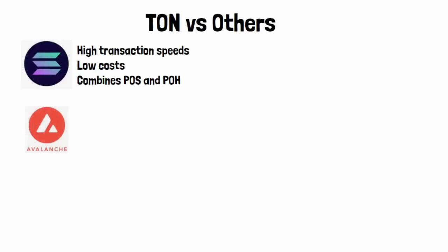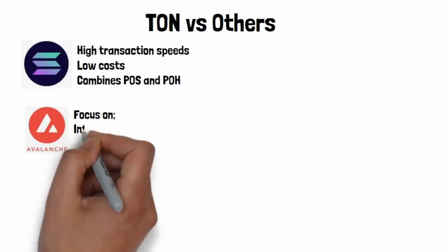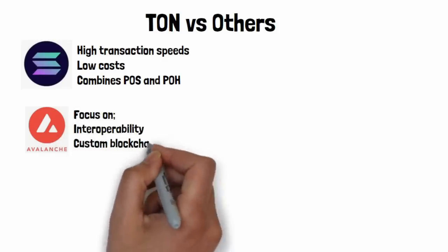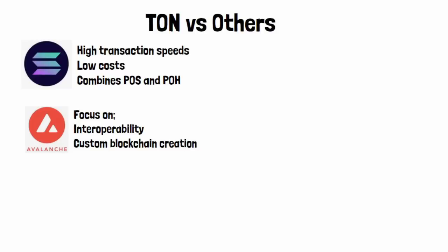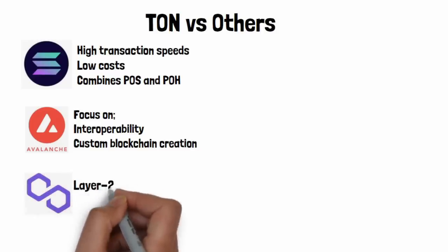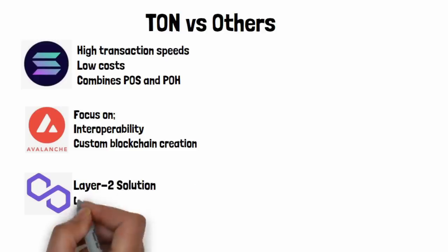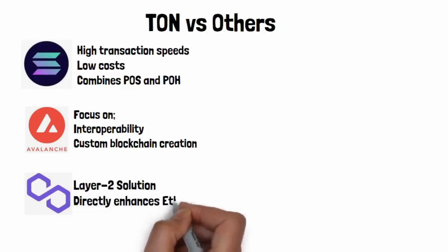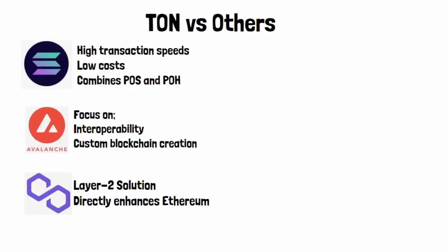Avalanche's focus is on interoperability and custom blockchain creation, allowing developers to launch their own blockchain with different rules. Next we have Polygon, a layer 2 solution for Ethereum. It's designed to scale Ethereum by making transactions faster and cheaper, similar to TON's goal of scalability. But while TON is independent, Polygon directly enhances Ethereum, giving it a strong foothold in the Ethereum ecosystem.